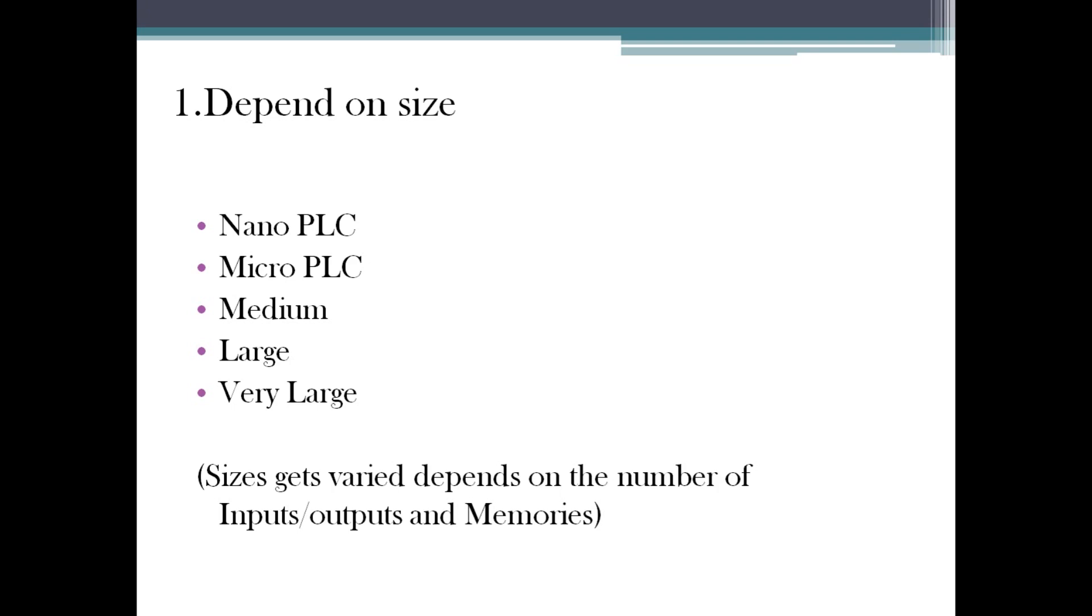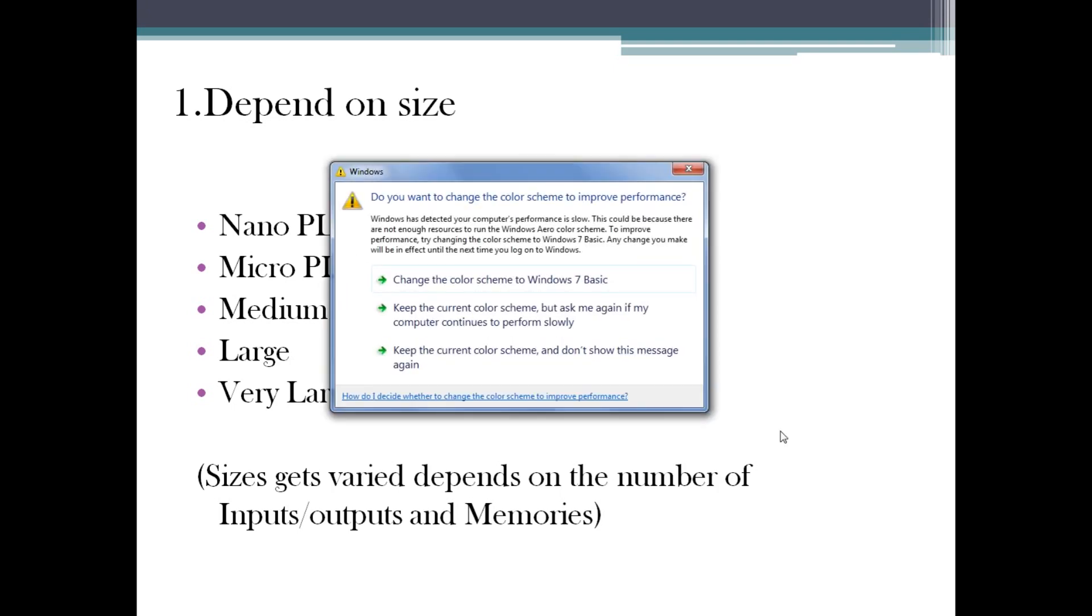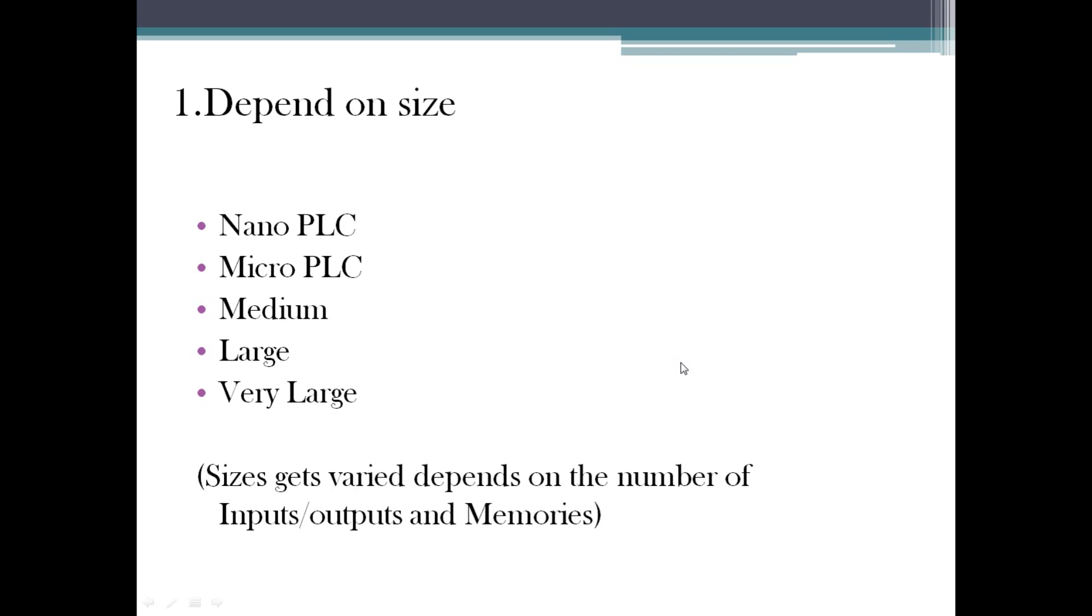Combinedly I am telling both digital, analog, everything - number of IOs will be more in very large and moreover memories also have some impact. Depends upon the memory size of the PLC also it is getting varied. This depends on size will vary with two parameters: number of IOs and memories.